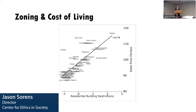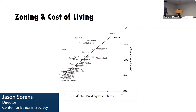Here's a plot of residential building restrictions on the x-axis and state price parity — cost of living — and you see an extremely strong relationship by state. The more restrictive your land use regulation, the more costly is housing — not just housing, everything. Your total cost of living is higher in your state. Here's New Hampshire right here: relatively restrictive, relatively expensive.